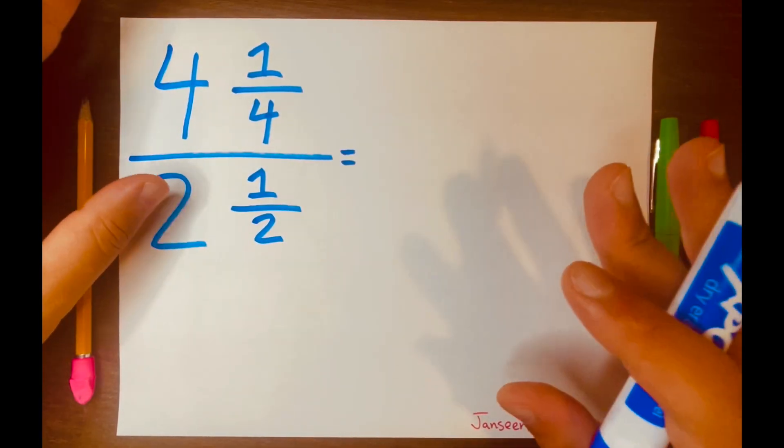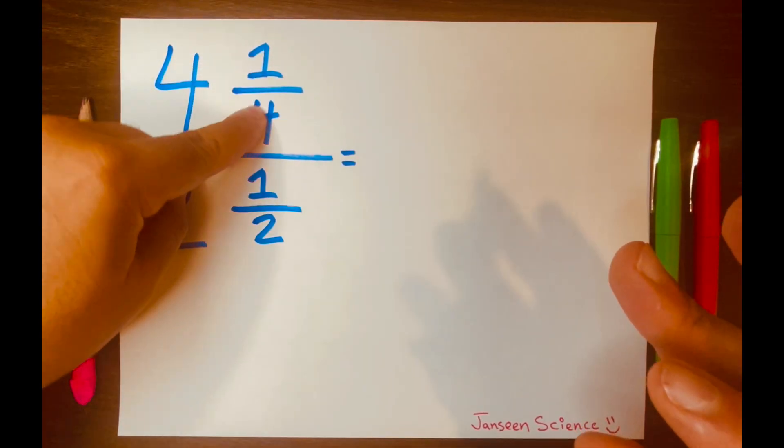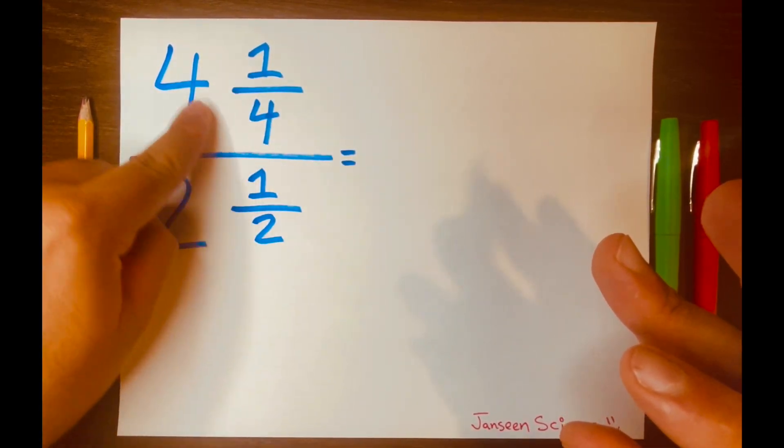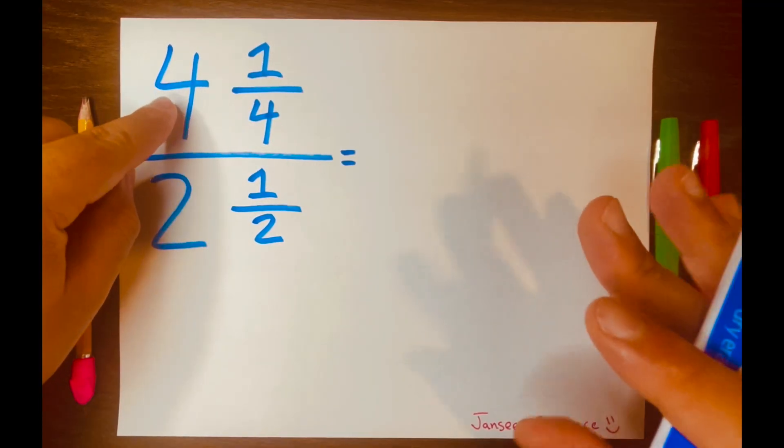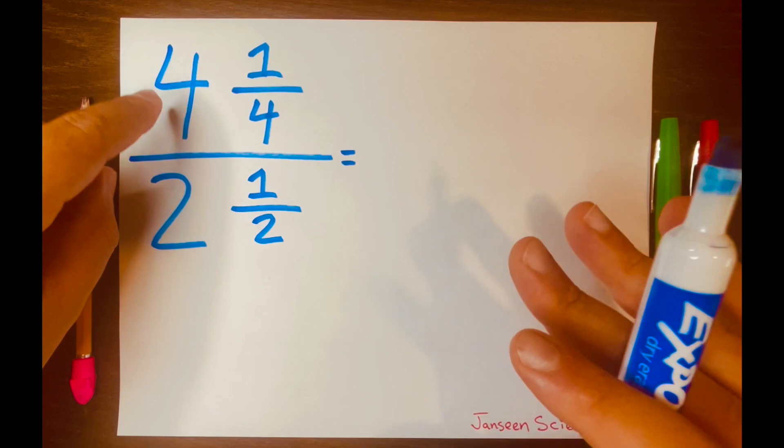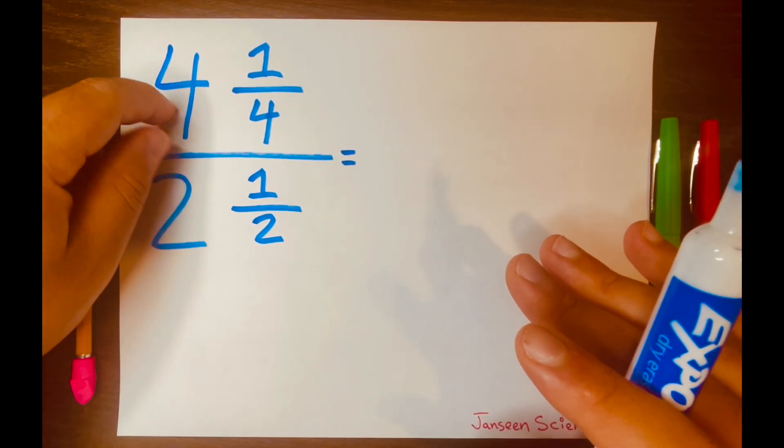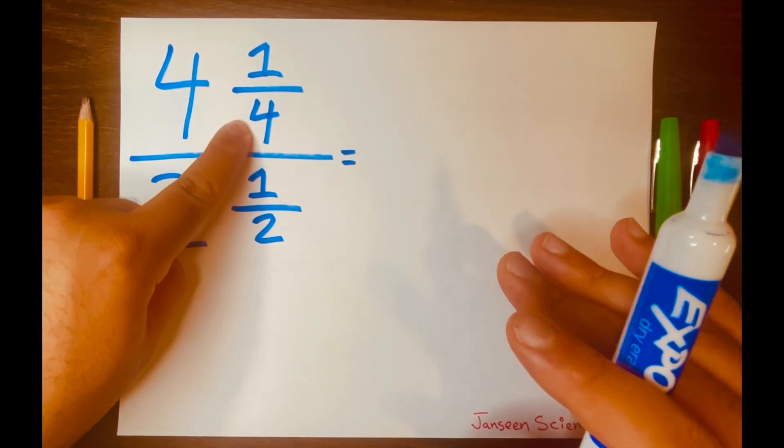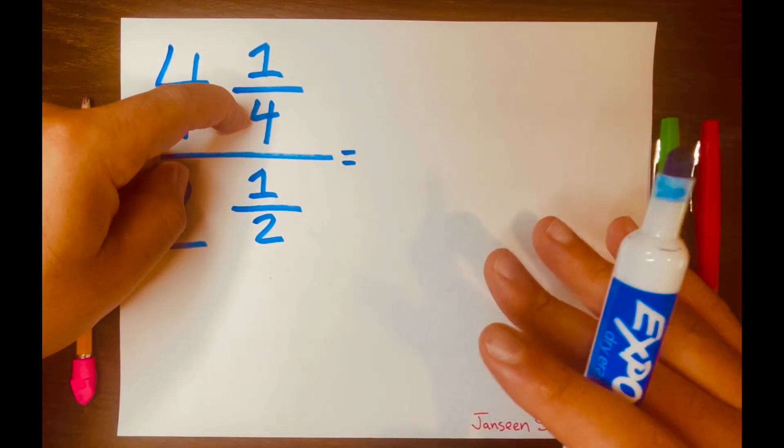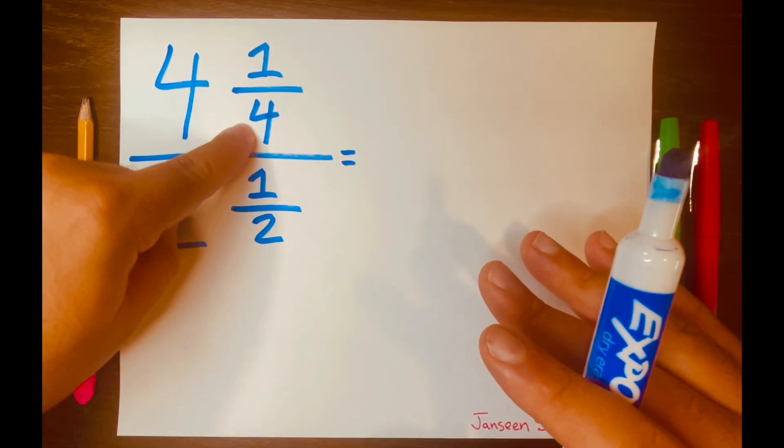I will start with the top part of this fraction, 4 1/4, and notice this is called a mixed number. If you forgot what a mixed number is, a mixed number is a whole number, like the 4, combined with a proper fraction. A proper fraction is when the top number is small, the bottom number is big.